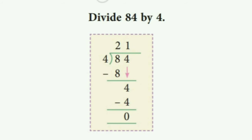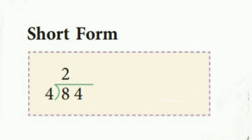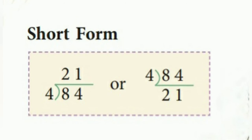Now we have to divide 4 by 4. So 4 ones are 4. Next step is to subtract: 4 minus 4 is 0. We can also do it in short form: for 84 divided by 4, at tens place we have 8, so 4 twos are 8, then 4 ones are 4. So the quotient is 21.